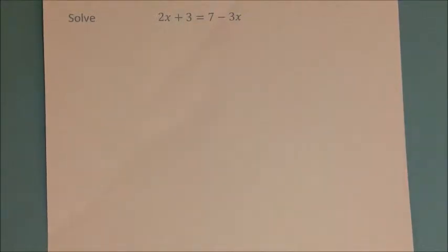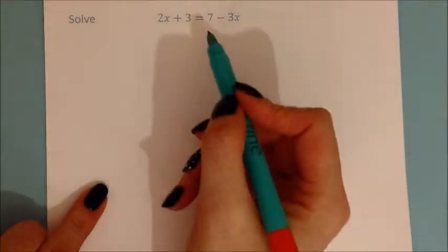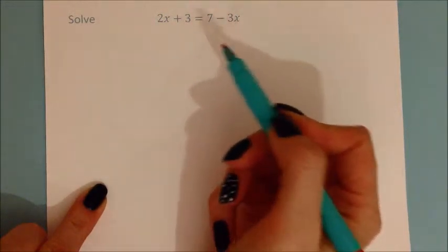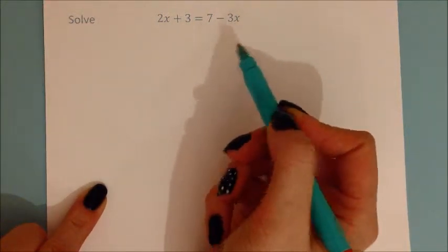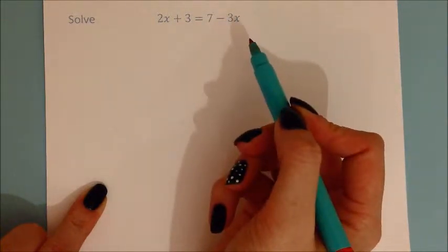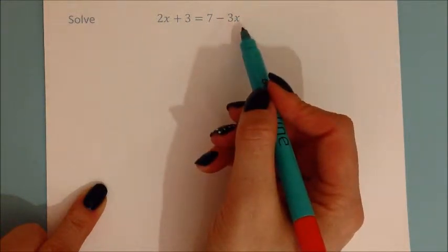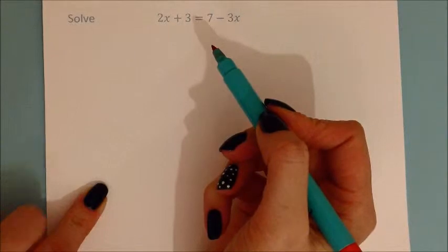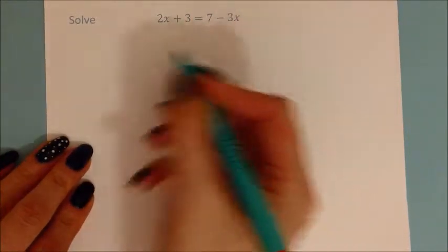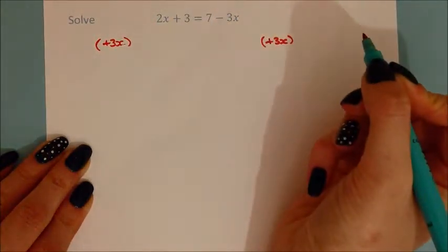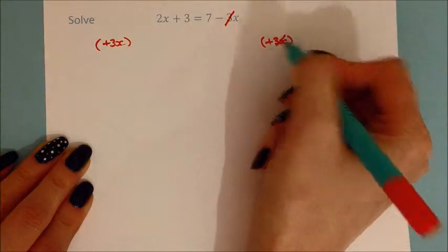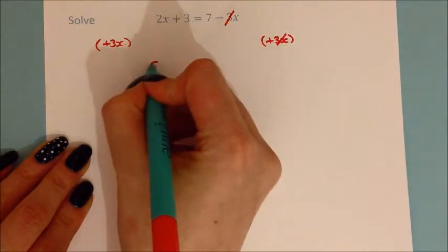Now we're going to look at rearranging slightly harder equations where the variable you want is on both sides. Going back to solving: if we have x on both sides, we can't solve it yet, so we need to get rid of it from one side. You always get rid of the smallest number of the variable — in this case minus 3x is smaller than plus 2x — so we add 3x to both sides. Adding 3x removes it from the right, and 2x plus 3x gives 5x on the left.